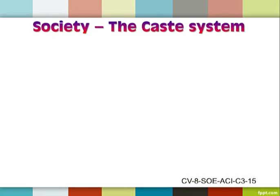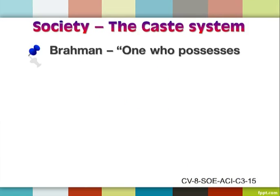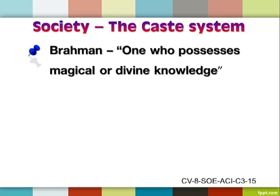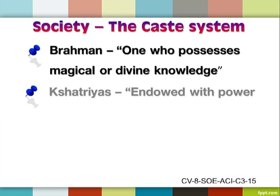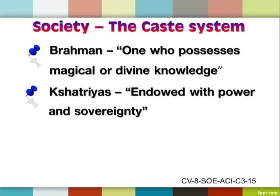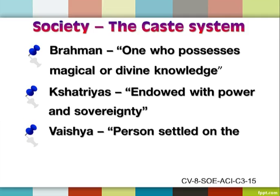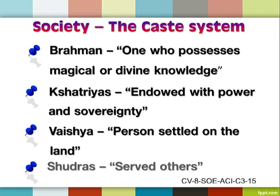The Vedic society had followed the caste system. Brahman: one who possesses magical or divine knowledge. Kshatriyas: endowed with power and sovereignty. Vaishya: person settled on the land. And Sudras were the ones who served others.